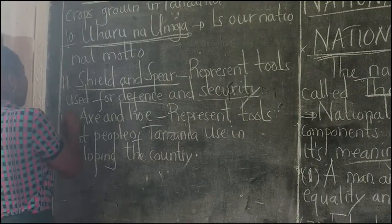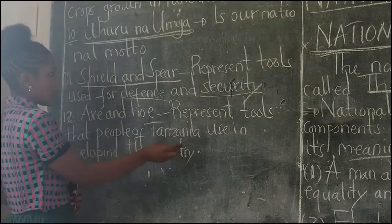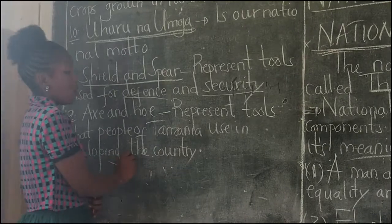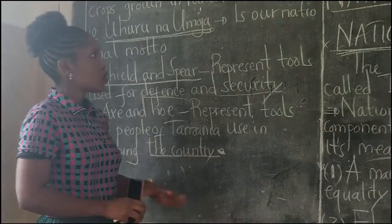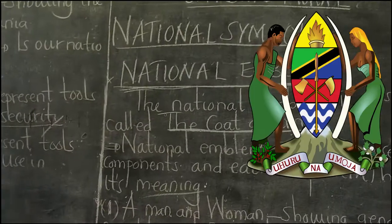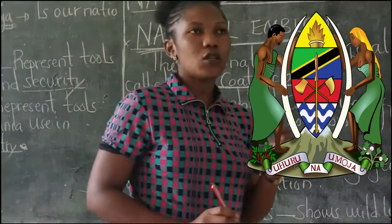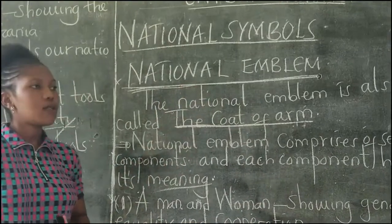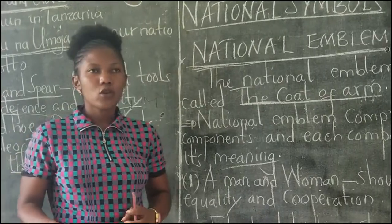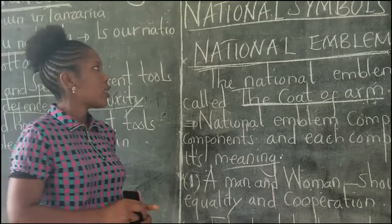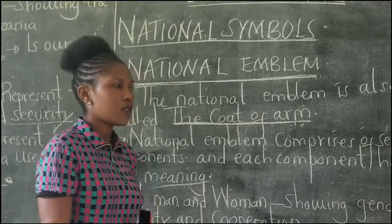Component number twelve is the Axe and Hoe, which represent tools that the people of Tanzania use in developing the country — tools used for production. So this is all about the national emblem, which comprises twelve components, each with its own meaning. The national emblem is a special symbol standing as a national badge of our country, school, or organization. It is also used in government documents like passports, and so forth.